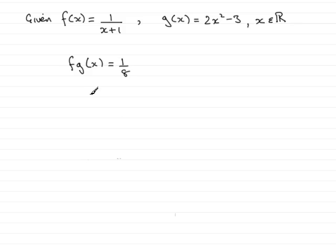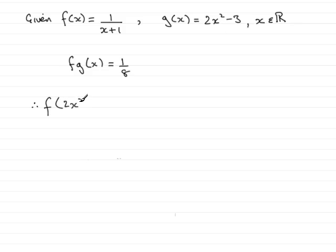Now in order to solve this, what we need to do is simplify the left hand side. So fg of x is really the same as f of g of x. So g of x is 2x squared minus 3 — pop that in bracket there. And this equals 1 eighth.